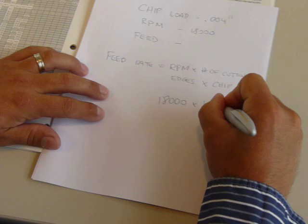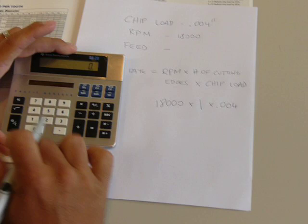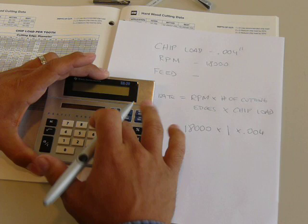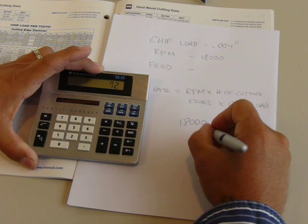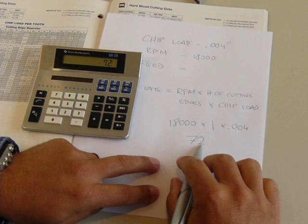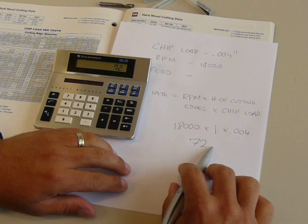Now, if we calculate this, we have 18,000 RPM times one for the number of flutes and times 0.004, which is the chip load. Now, that will equal 72, which is the number you're looking for. That's your feed rate, and that is in inches per minute. So, when we calculate this, it's 72 inches per minute would be the correct feed rate for this particular tool running at 18,000 RPM.